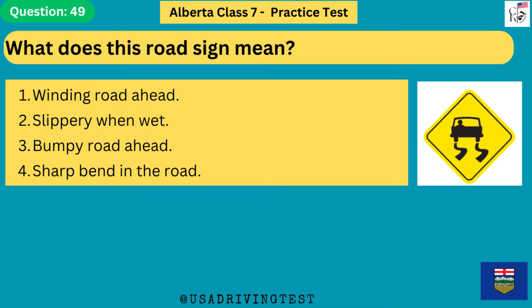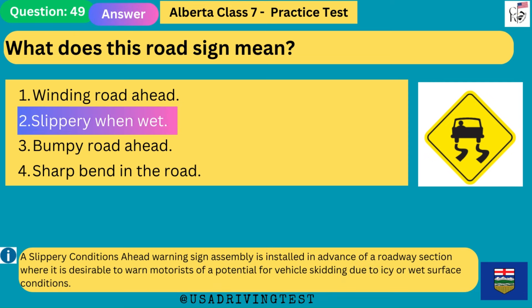What does this road sign mean? 1. Winding road ahead. 2. Slippery when wet. 3. Bumpy road ahead. 4. Sharp bend in the road. The answer is 2: slippery when wet. A slippery conditions ahead warning sign assembly is installed in advance of a roadway section where it is desirable to warn motorists of a potential for vehicle skidding due to icy or wet surface conditions.